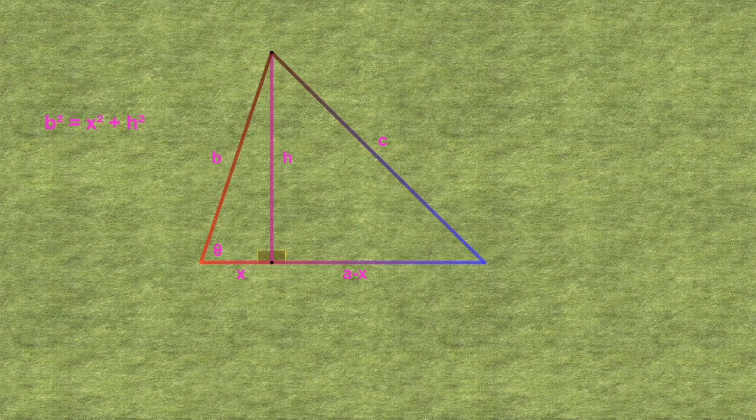Let's start with the triangle on the left. We apply the normal Pythagorean theorem to it to see that the unknown x squared plus h squared equals the known b squared. So, we have one equation or one piece of information for trying to solve x and h. Since there are two unknowns, we need two pieces of information.